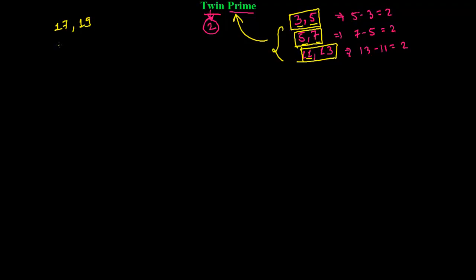And, there are a lot, I think, this is, yeah, 29, 31, 29 and 31. See, 29 is also prime number, and 31 is also prime number. And, difference between this 29 and 31 is 2.